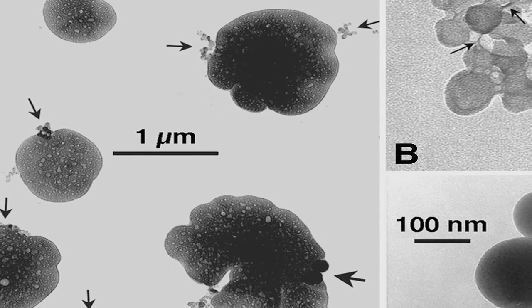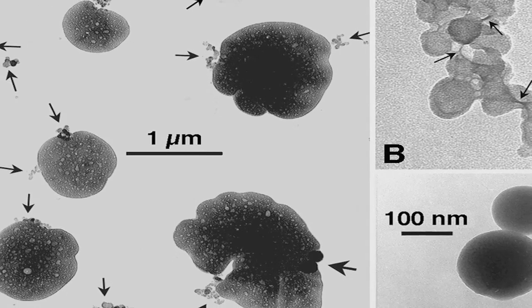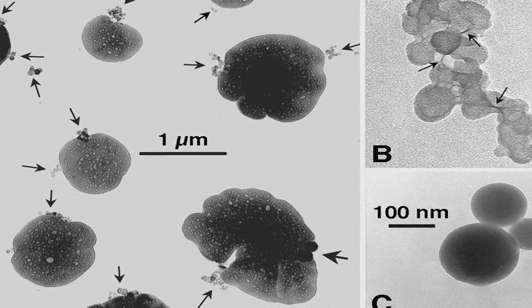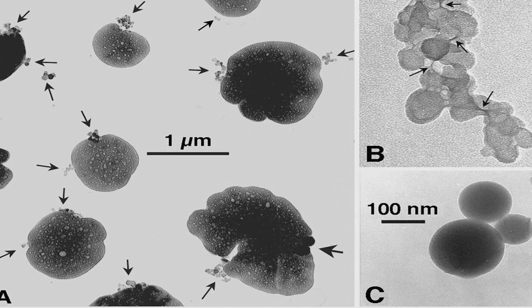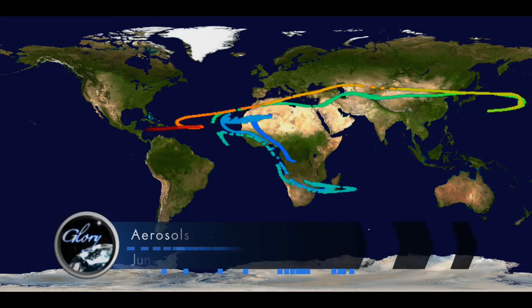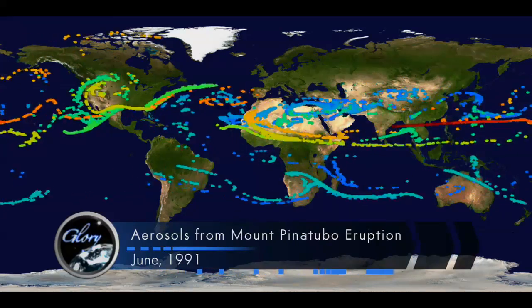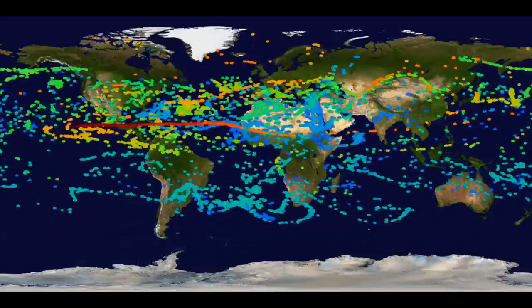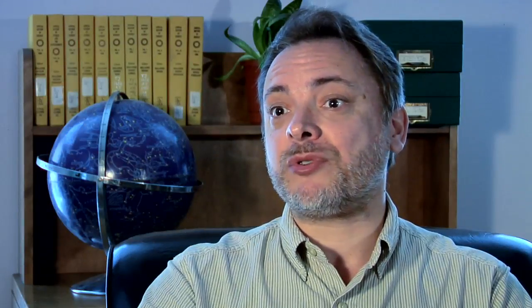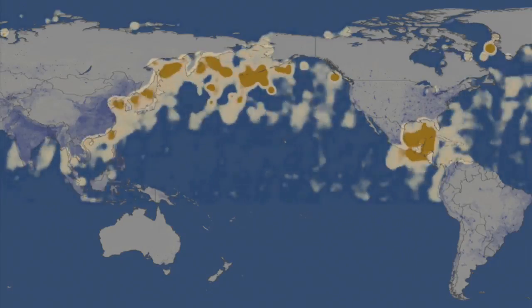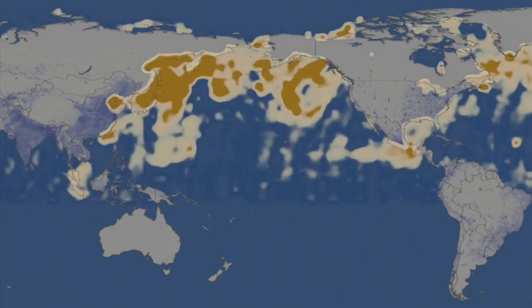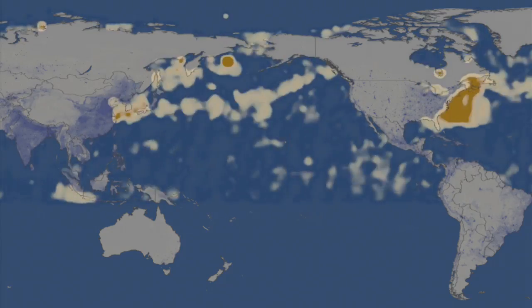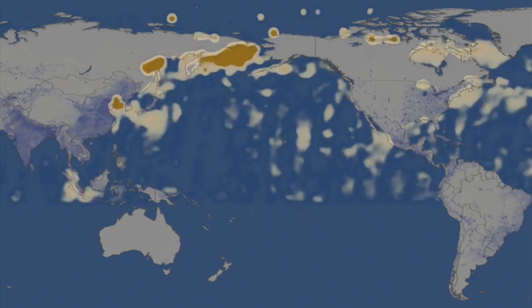Aerosol particles can differ by their size, their chemical composition, and their shape. All these variables can be mixed together, and that's what makes aerosols so difficult to study. At any given location, particles of different types and different origins can coexist. If a particle is generated somewhere in China, it can be transported to the United States of America, making the total aerosol population at any given location extremely complex.